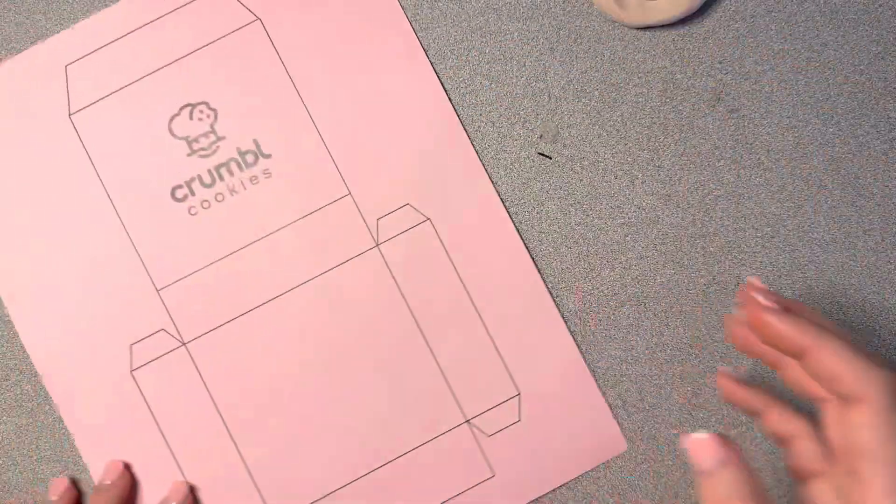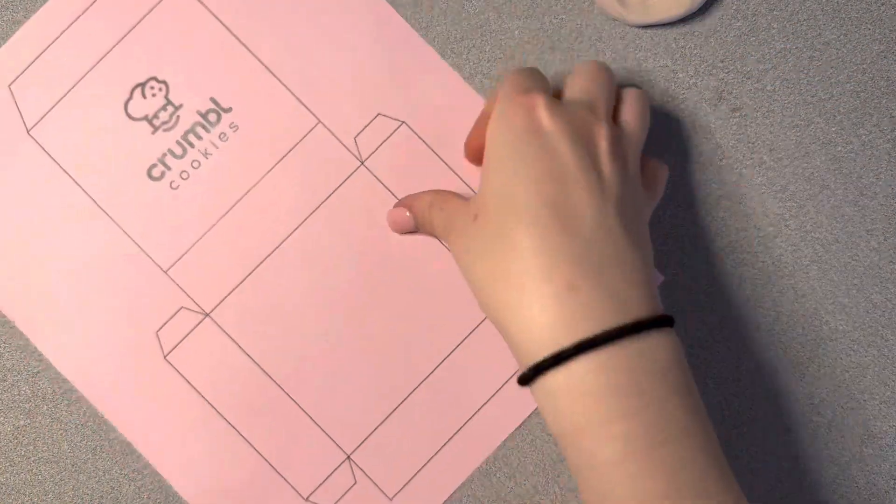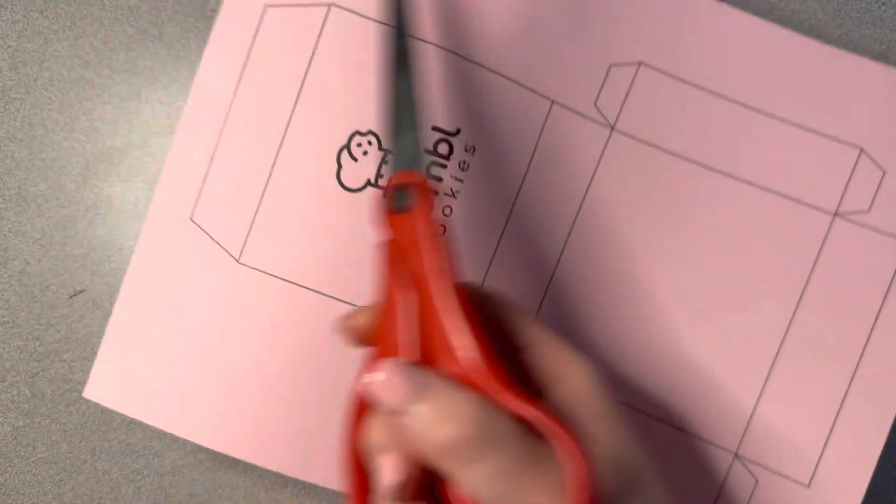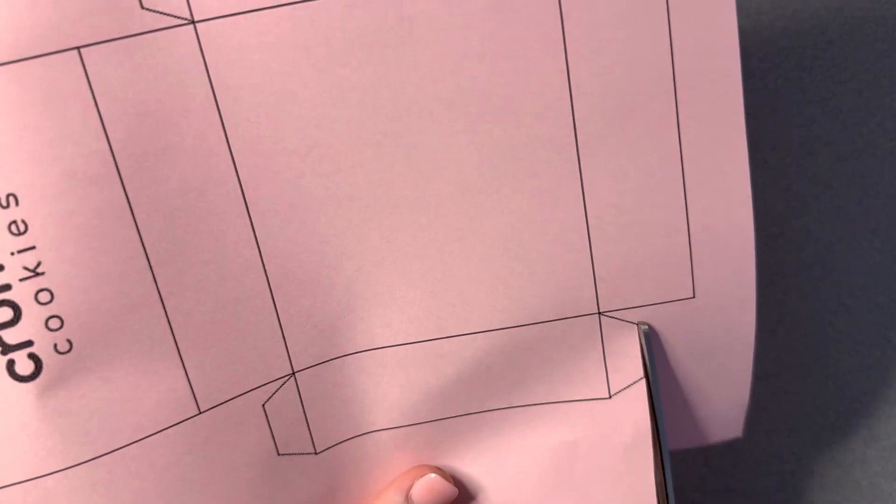The second step is I'm going to set that to the side. You're going to get your box paper, and it's really thin, so be careful whenever you're cutting it. But you're going to cut out this entire shape.